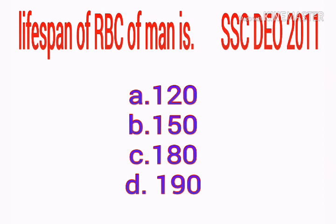What is the life span of RBC in humans? Options: a) 120 days, b) 150 days, c) 180 days, d) 190 days. Your answer is 120 days.